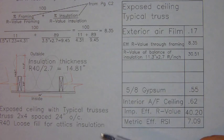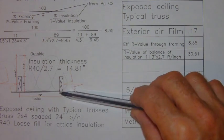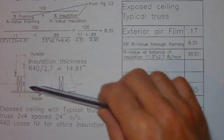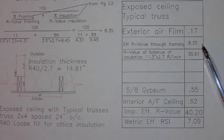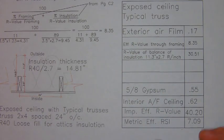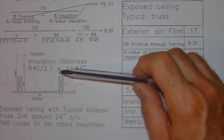Then, as established, the effective R-value through the framing is 8.35. The balance of the insulation provides us an R-value of 30.51.